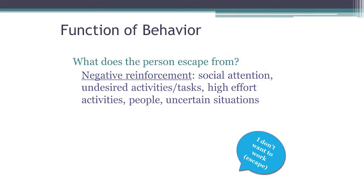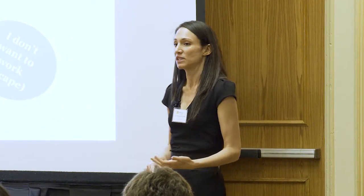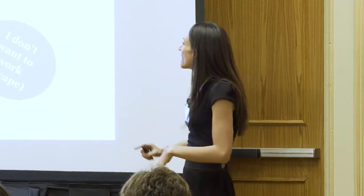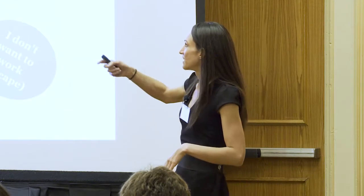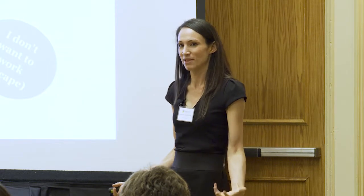Negative reinforcement is getting out of things that are aversive in some way. People often talk about getting out of work as negative reinforcement — that is one example. But there's also wanting alone time, getting away from social attention, getting out of undesired activities or tasks, high-effort activities, or uncertain situations. Especially if you have autism and social cues are completely ambiguous and very confusing — you can see how some of that might play in.